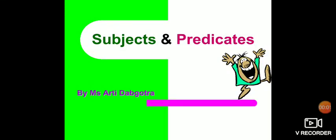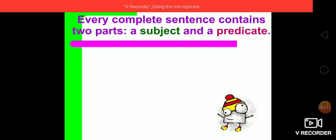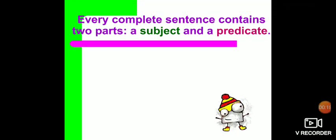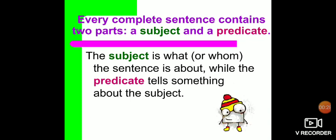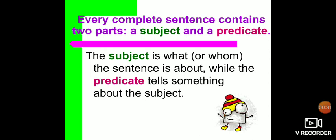Hello students. In the previous video we have read about sentences and its kinds. Now we are going to study about the parts of a sentence. Every sentence contains two parts — it is divided into two parts: a subject and a predicate. The subject is what or whom the sentence is about, while the predicate tells something about the subject.